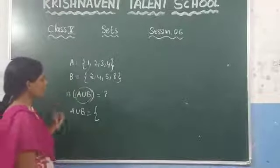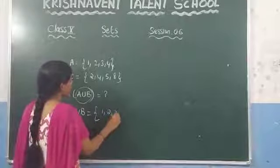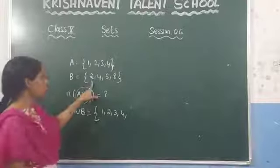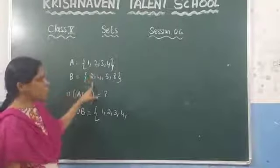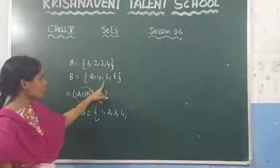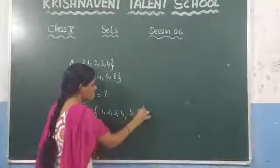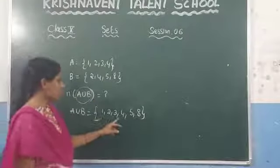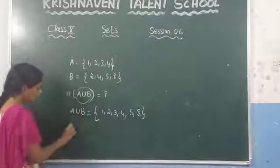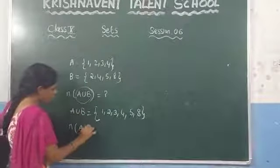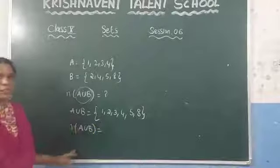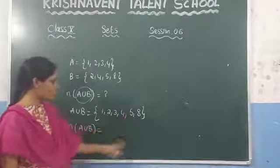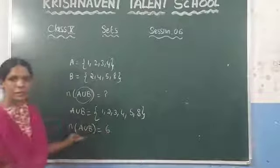Write the elements: 1, 2, 3, 4 — and since elements cannot be repeated, we do not write 2 and 4 again. The next new elements are 5 and 8. So A ∪ B = {1, 2, 3, 4, 5, 8}. To find N(A ∪ B), count the number of elements: 1, 2, 3, 4, 5, 6. The value of N(A ∪ B) is 6.